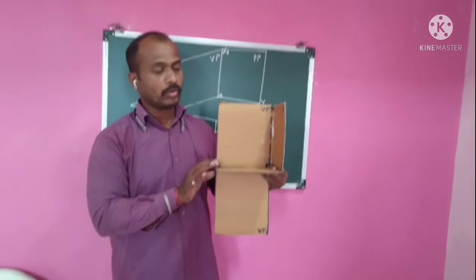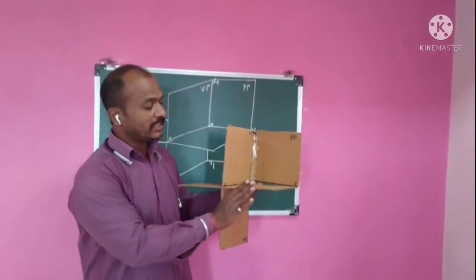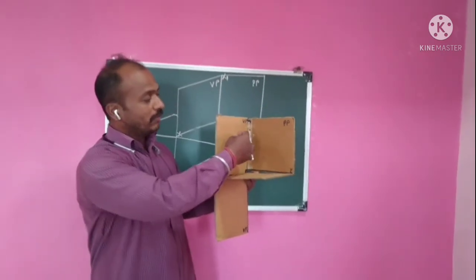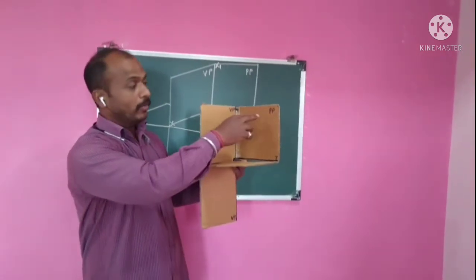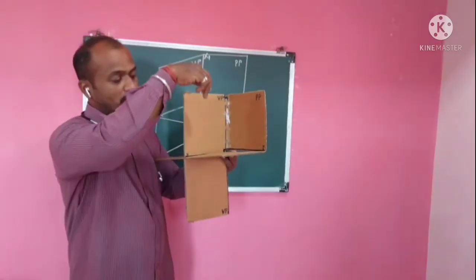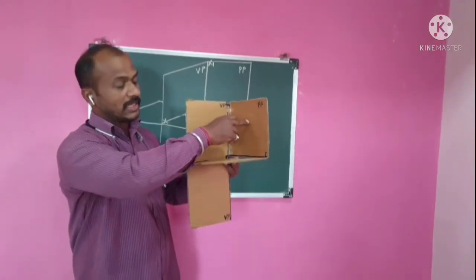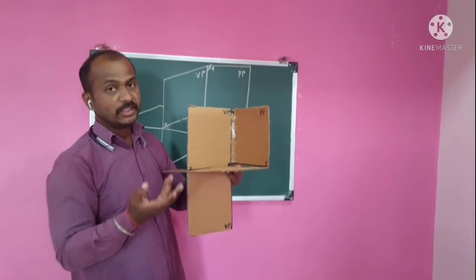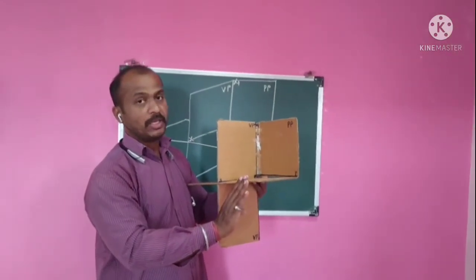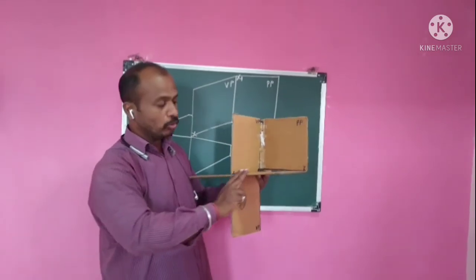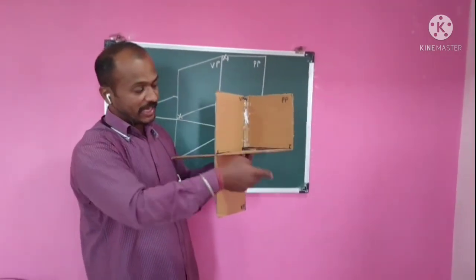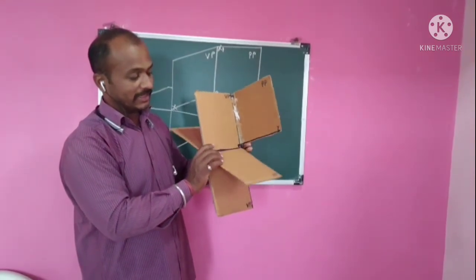To convert to 2D, we rotate the HP by 90 degrees in the clockwise direction. The top view is on the HP, the front view is on the VP, and the side view is on the PP. We rotate the HP by 90 degrees clockwise in this direction.